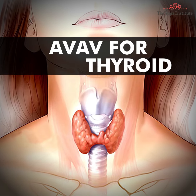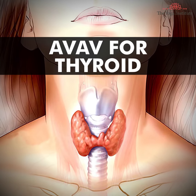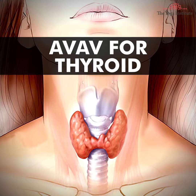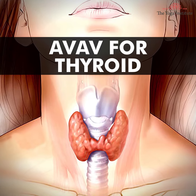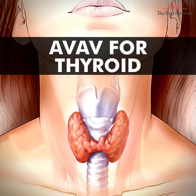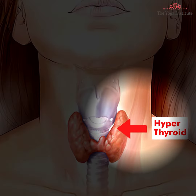Thyroid is a butterfly-shaped gland situated in the neck region. The regulation of hormones plays a huge role in this. There are two types: hyper and hypo.